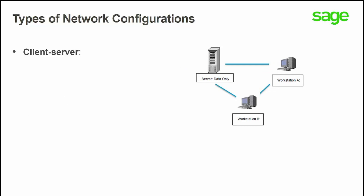The second type of network configuration supported by Sage50 is a client-server environment. Client-server networks are commonly used by small to medium businesses that have access to a dedicated server. In a client-server environment, workstations and a dedicated server are connected to the same network, and certain files are stored on the server in a shared location.